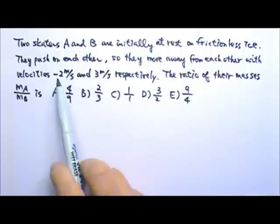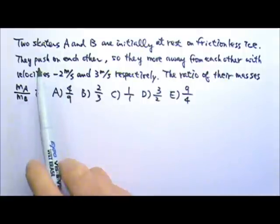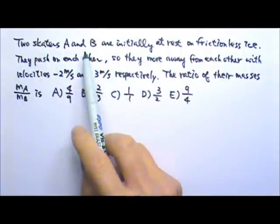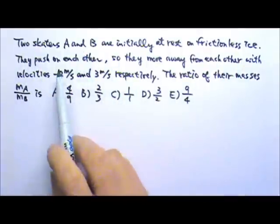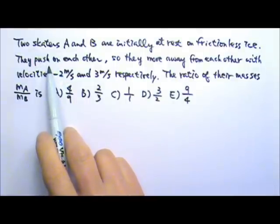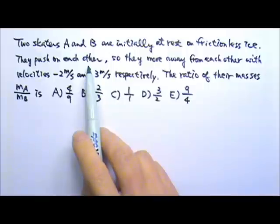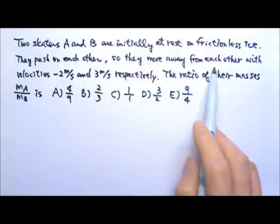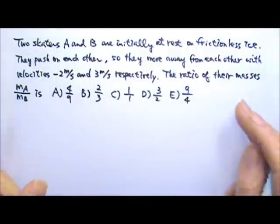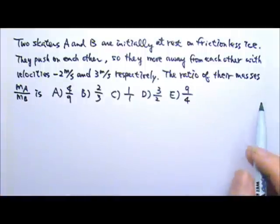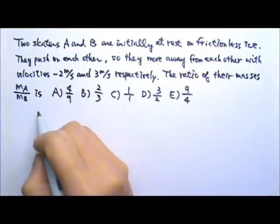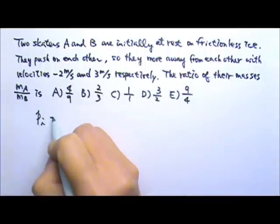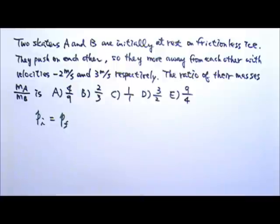This is an explosion problem. The two skaters start together and then there's energy released from the two people burning calories and the energy gets released and they move away from each other. So it's an explosion problem which means that we can use conservation of momentum, so initial momentum equals the final momentum.